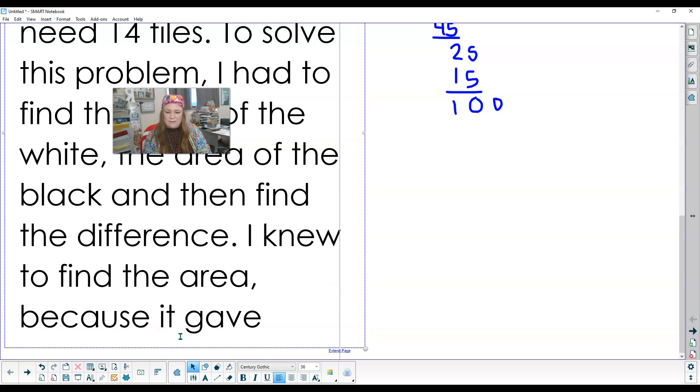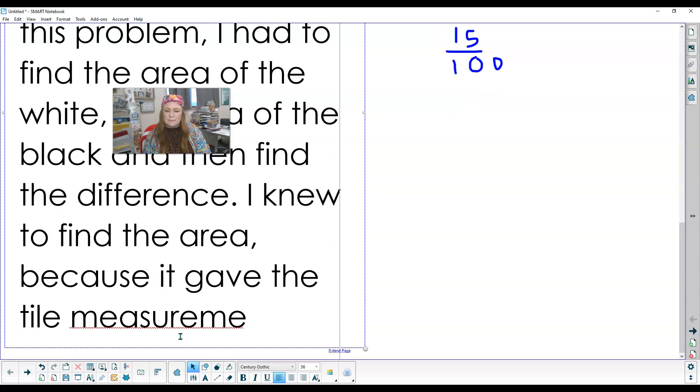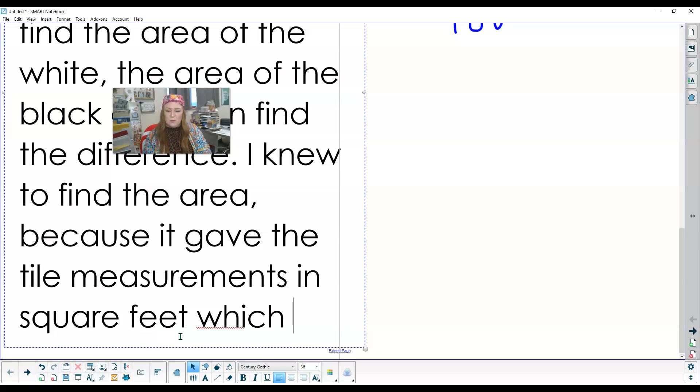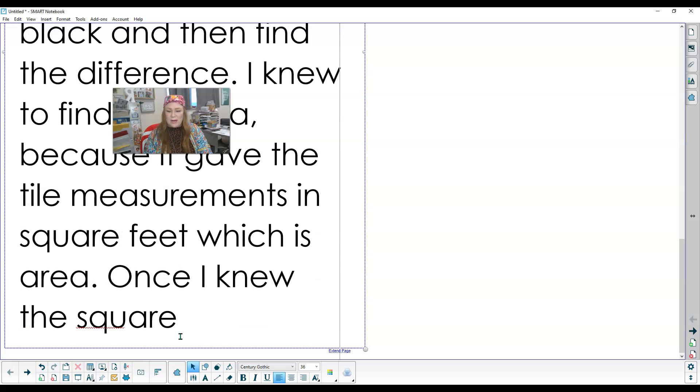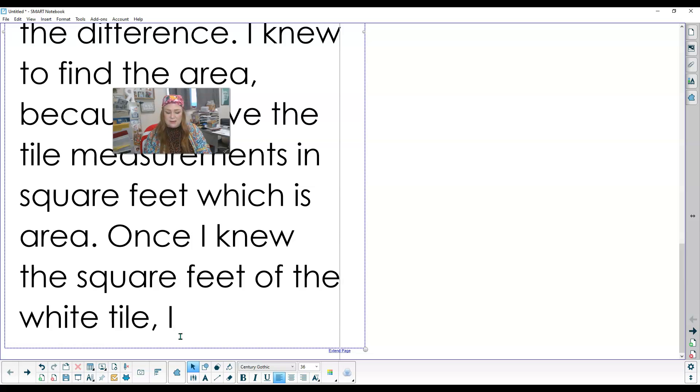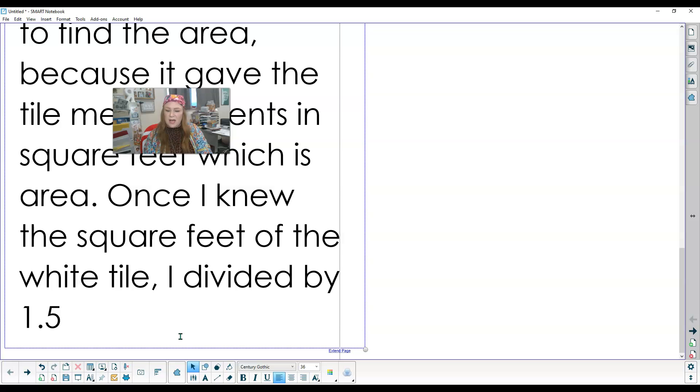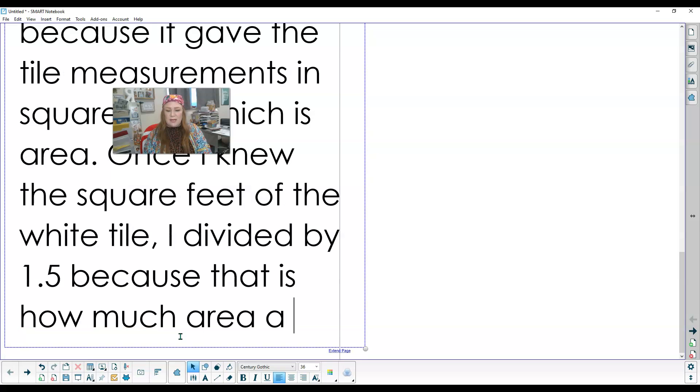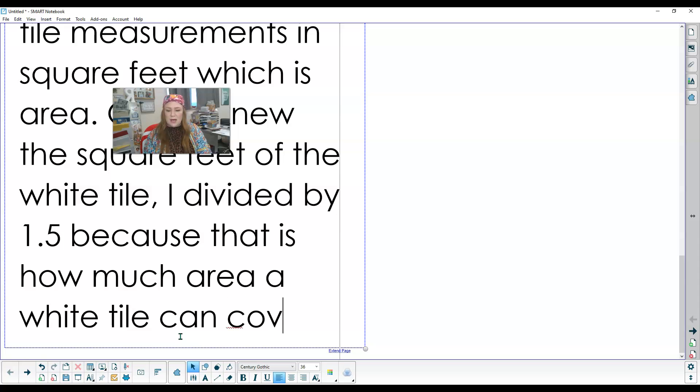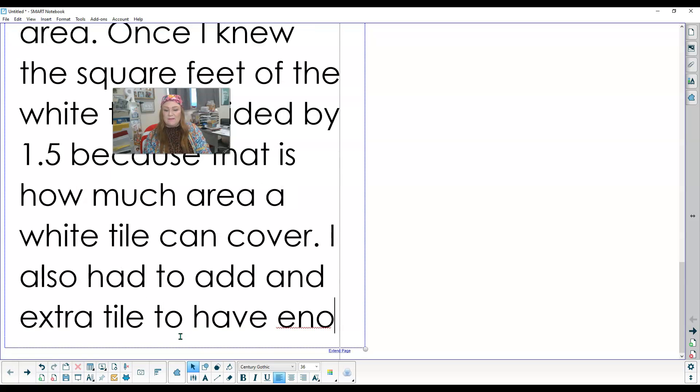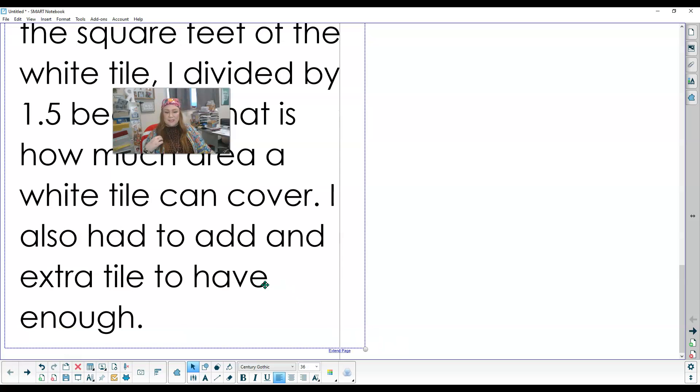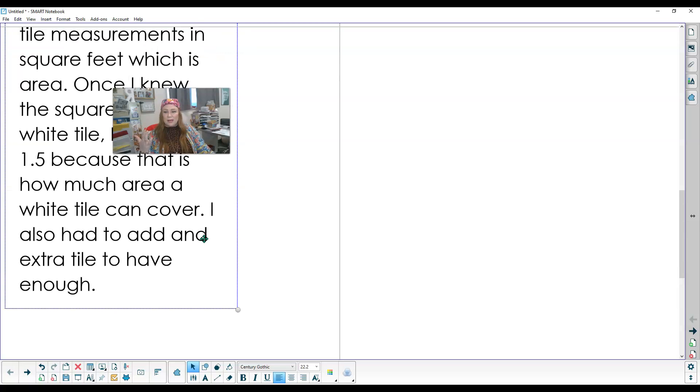Because it gave the tile measurements in square feet, which is area. So once I knew the square feet of the white tile, I divided by 1.5 because that is how much area a white tile can cover. I also had to add an extra tile to have enough.